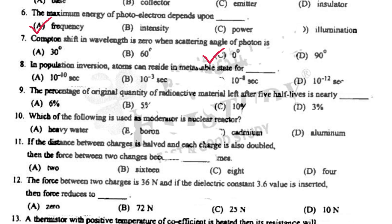In population inversion, atom can reside in metastable state for 10 to the power minus 3 seconds. The percentage of original quantity of radioactive material left after 5 half-lives is nearly 3.125%.